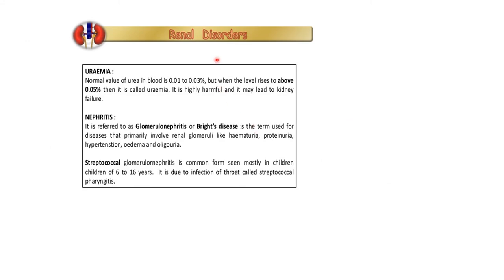Other renal disorders: uraemia — the normal value of urea in blood is 0.01 to 0.03%, but when it rises above 0.05% it is called uraemia, which is highly harmful and leads to kidney failure. Nephritis refers to glomerulonephritis or Bright's disease — diseases primarily involving the renal glomeruli — with symptoms like hematuria, polyuria, proteinuria, hypertension, edema, and oliguria. Streptococcal glomerulonephritis is a common form seen mostly in children aged 6 to 16 years, caused by infection with Streptococcus pharyngitis bacteria entering the kidney.